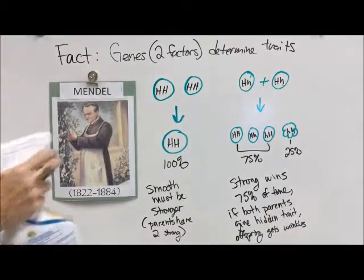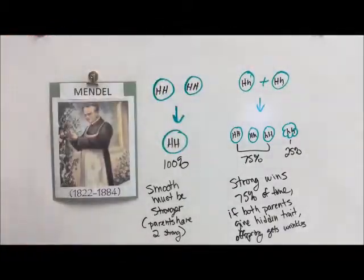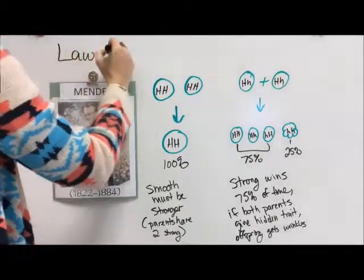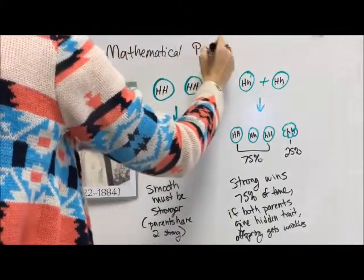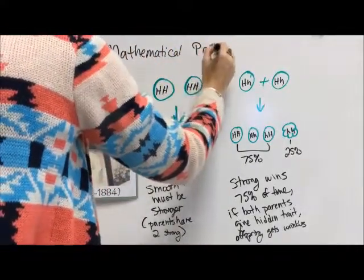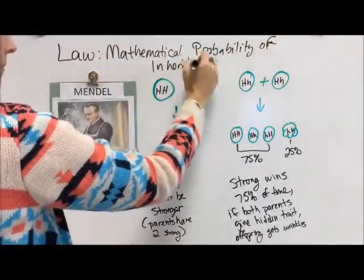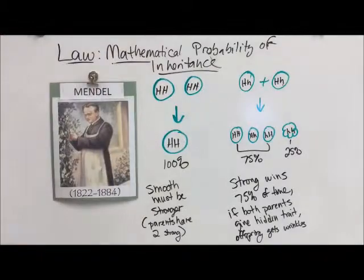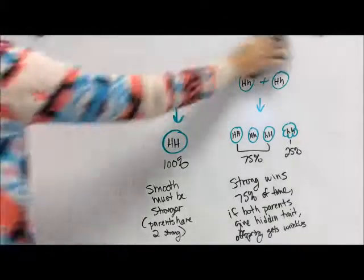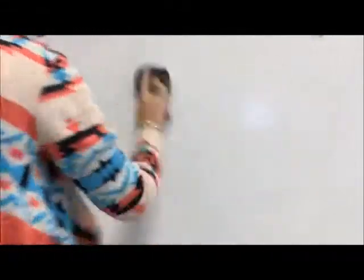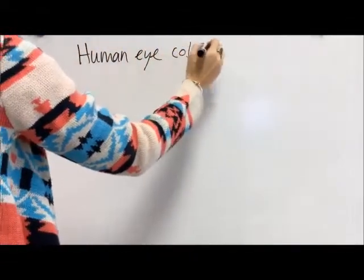After years of research and tons of data collection, this turns into a mathematical law. We can mathematically predict inheritance based on probability — we can see the possibility that traits will be passed on. That's why it's called the laws of inheritance: because it's mathematical prediction, mathematical probability.